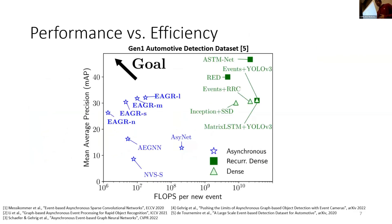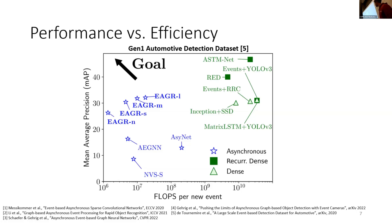We can plot these models in a 2D plot where the x-axis shows flops per new event — how many flops are needed to process each event — and the y-axis shows accuracy. On the right side we see CNN-based methods: very accurate and quite high, but also very far to the right, meaning high computation demands. By contrast, the stars represent the new asynchronous methods, starting with ASINET, the sub-manifold graph neural network, sparse convolutional neural network, and now culminating in EAGR, the asynchronous graph neural networks.